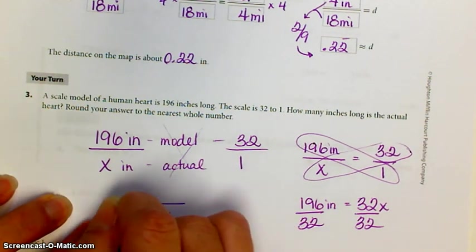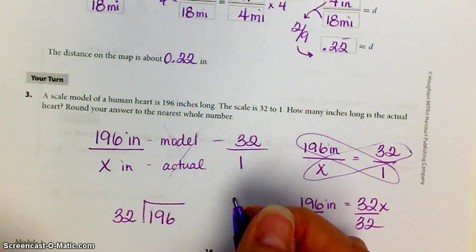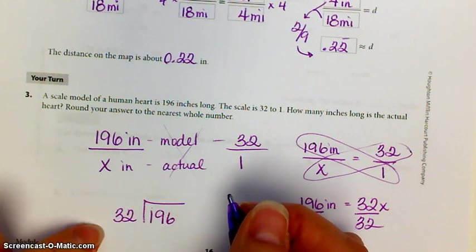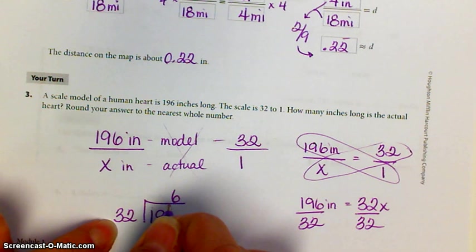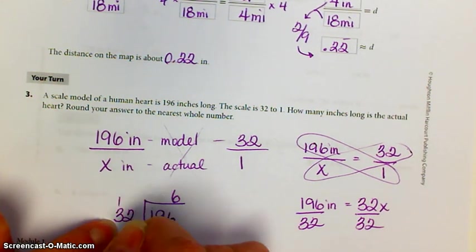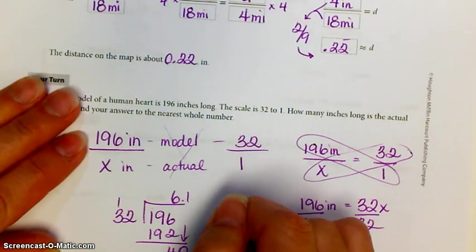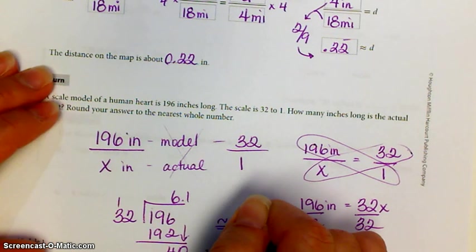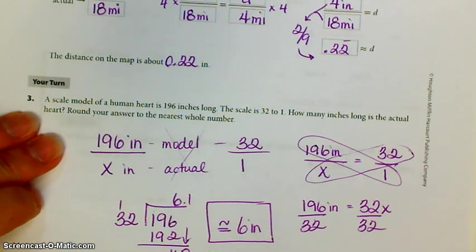196 divided by 32. Can she do math? Let's see. It's going to go into 100 about 3 times. I'm going to go with 6. 6 times 2 is 12. 6 times 3 is 18, plus 1 is 19. I guessed pretty good. And then I would carry down 0. So, about 6 inches. So, the human heart's about 6 inches. Not exactly, but about. Good enough.